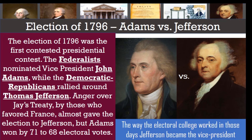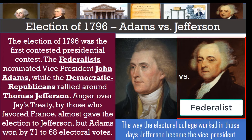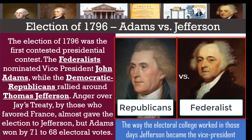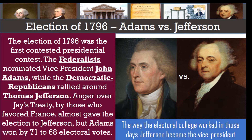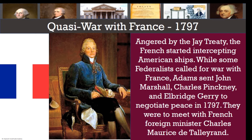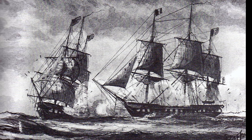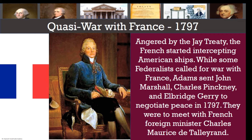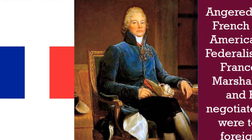All of this led to the election of 1796 — the first contested presidential contest. The Federalists nominated Vice President John Adams, while the Democratic-Republicans rallied around Thomas Jefferson. Anger over Jay's Treaty by those who favored France almost gave the election to Jefferson, but Adams won by 71 to 68 electoral votes. Under the Electoral College rules of those days, Jefferson would become vice president. Adams would inherit what would become called the Quasi-War with France. Angered by the Jay Treaty, the French started intercepting American ships. Adams sent John Marshall, Charles Pinckney, and Elbridge Gerry to negotiate peace in 1797, where they were to meet with French Foreign Minister Charles Maurice de Talleyrand.